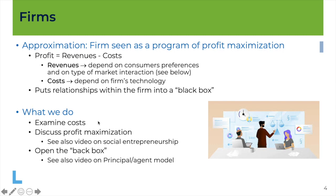We will briefly discuss this later in other videos when we put the assumption of profit maximization into perspective. I will invite you to watch a video on social entrepreneurship, for example, where entrepreneurs have different objectives than pure profit maximization. I will also invite you to watch a video on what is called the principal-agent model, which explains how objectives within the firm can be aligned or not, and what kind of policy can be applied within the company to try and make sure that different stakeholders have the same kind of objectives.